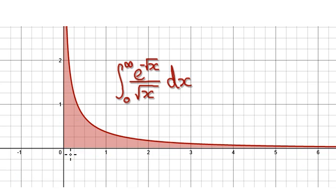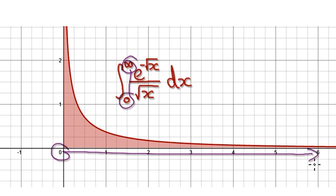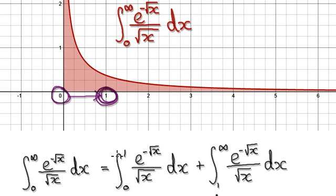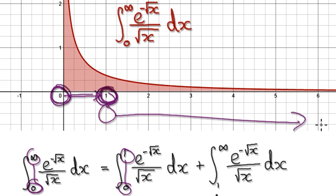To do this, we're going to break it up. Rather than doing it from 0 to infinity, we're going to break it up into two different sections. We're going to integrate it from 0 to 1 — you could select 2, 3, or 4, but select something simple. 1 is a simple intermediate point. So we're going to do it from 0 to 1, and then from 1 all the way to infinity.